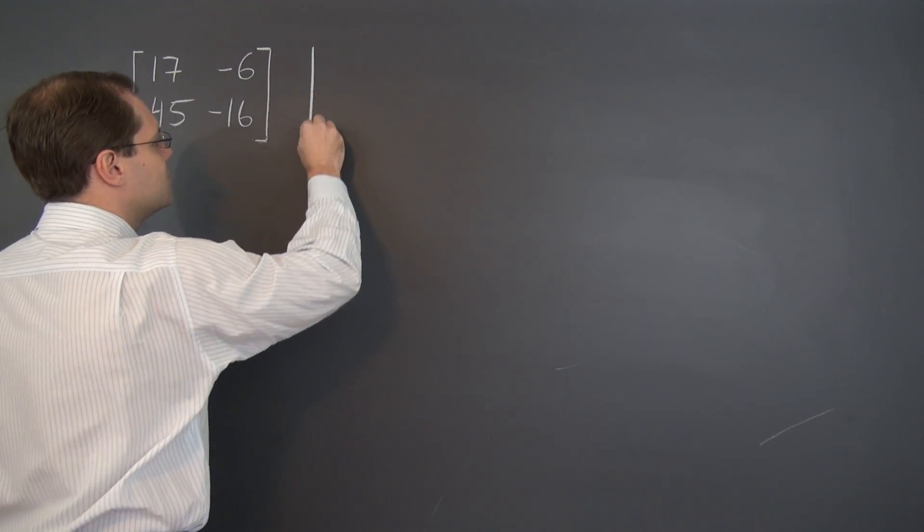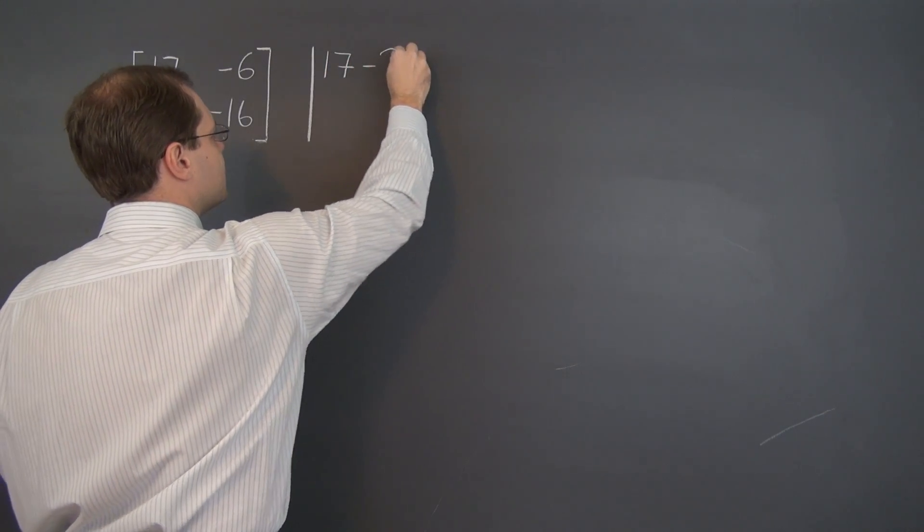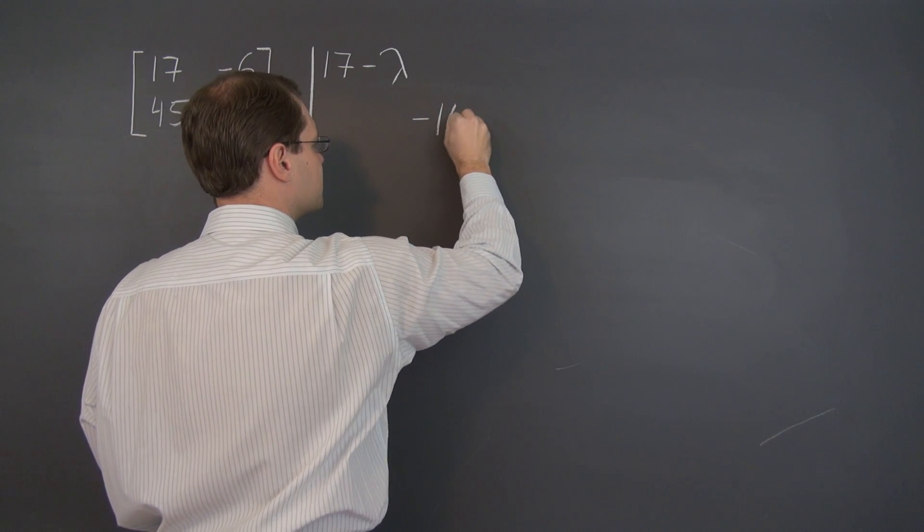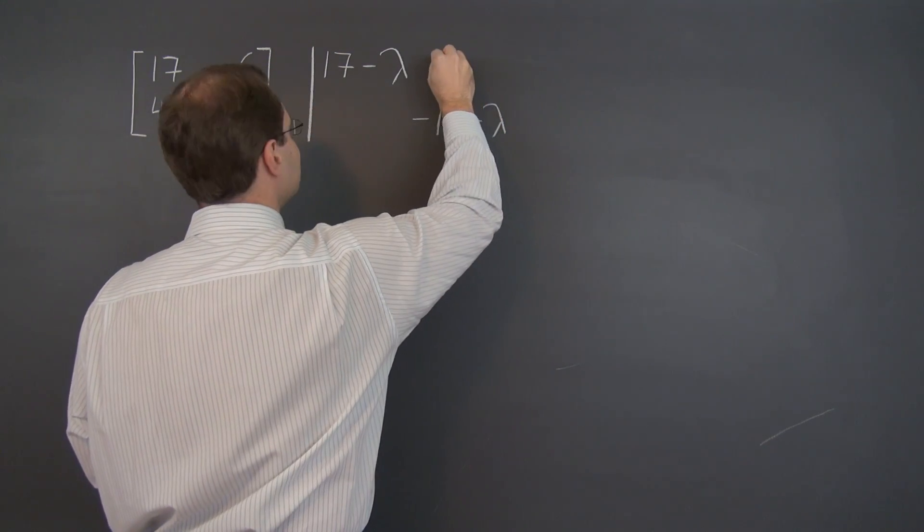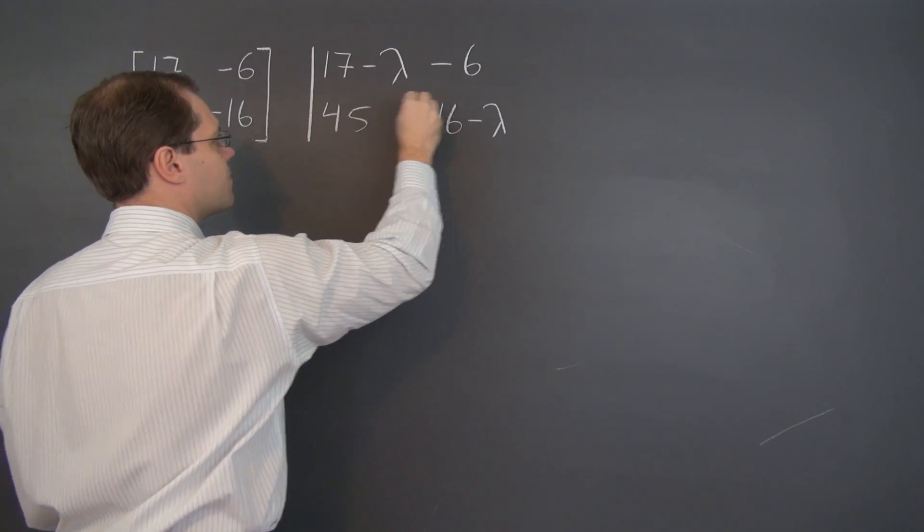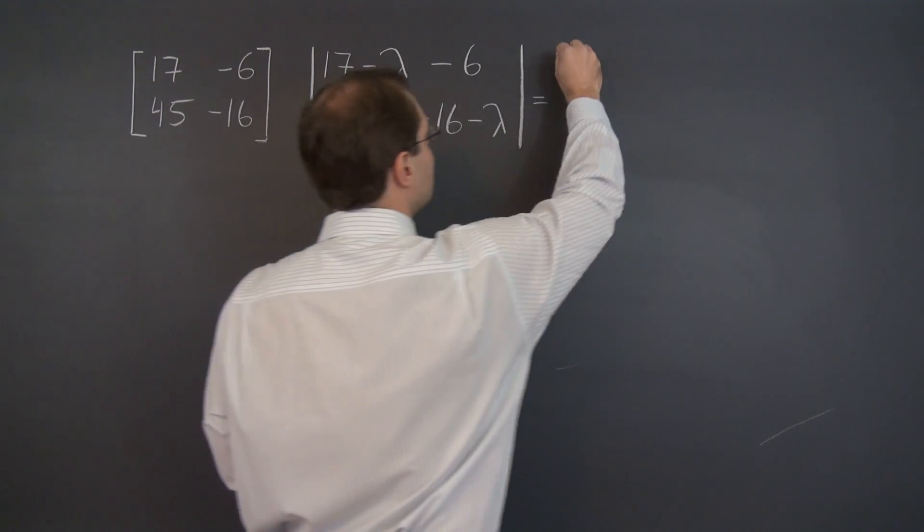The first step in the algorithm is subtracting lambda from the diagonal and evaluating the determinant of the matrix and equating that determinant to zero. Making sure I have space, we're in good shape.